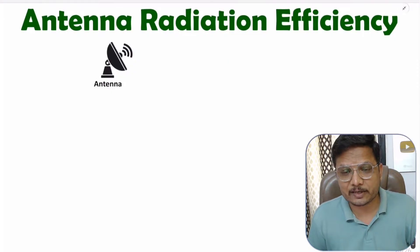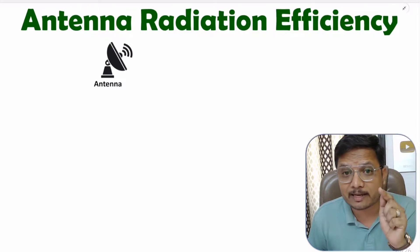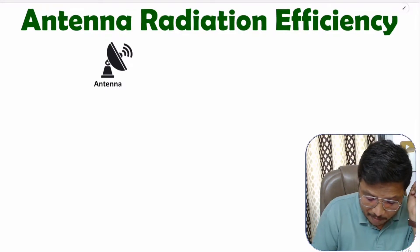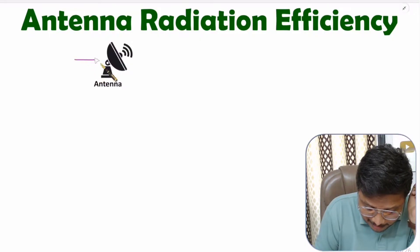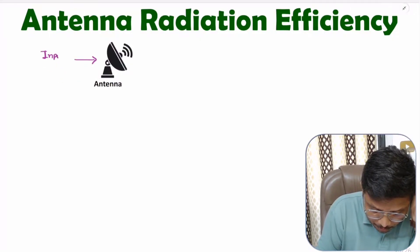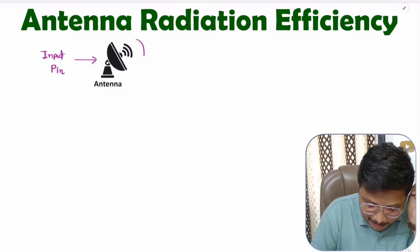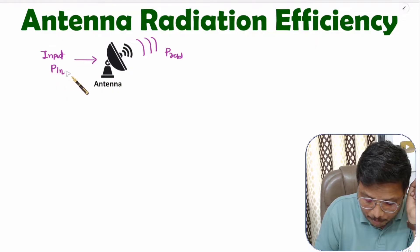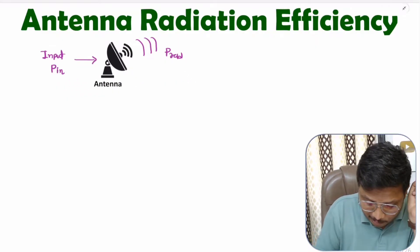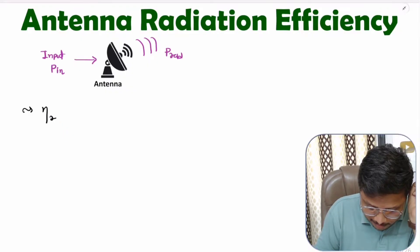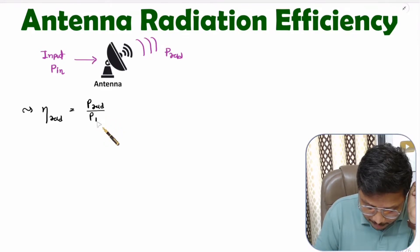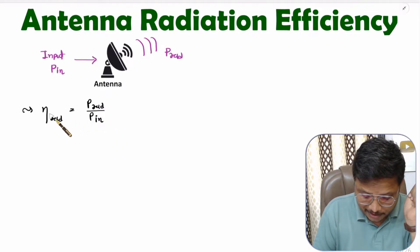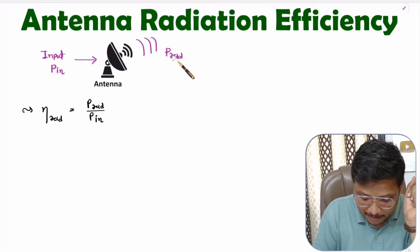Antenna radiation efficiency is purely based on how much power is radiated by the antenna. We have an antenna with input power P_in, and this antenna is radiating P_rad amount of power. Based on input power and radiated power, one can calculate antenna radiation efficiency — that is radiated power divided by input power to the antenna.